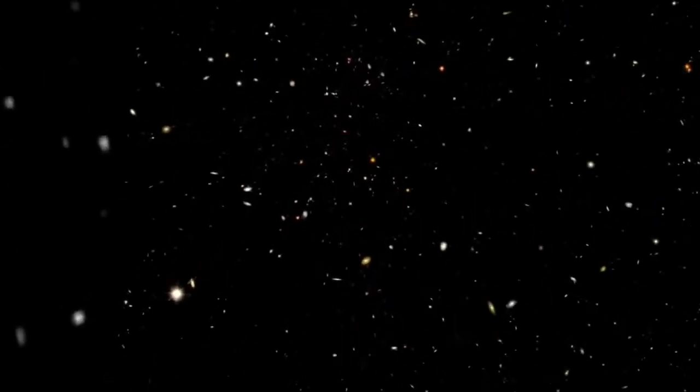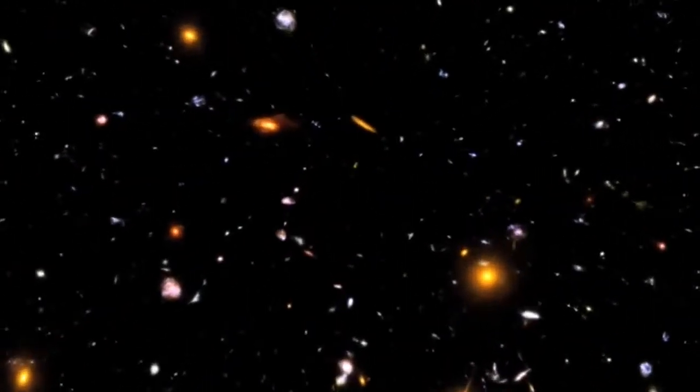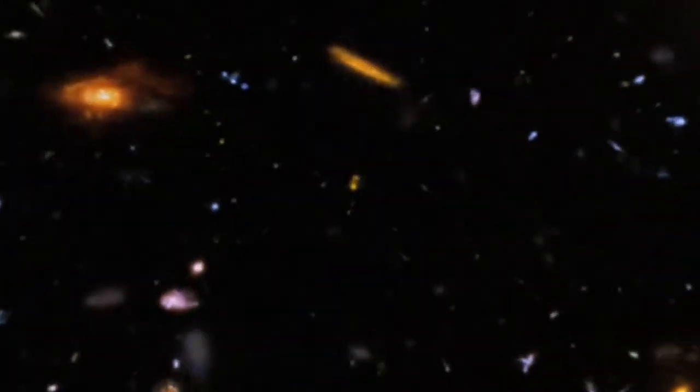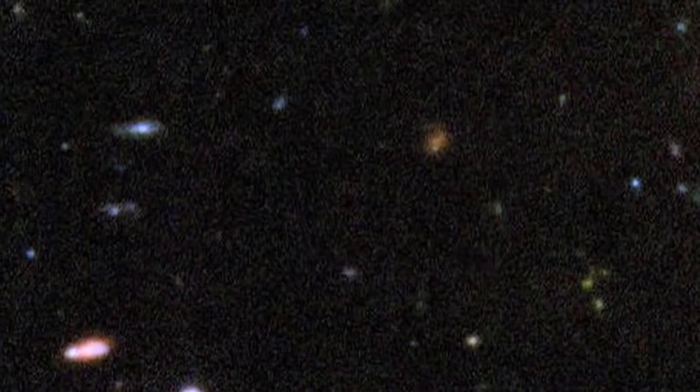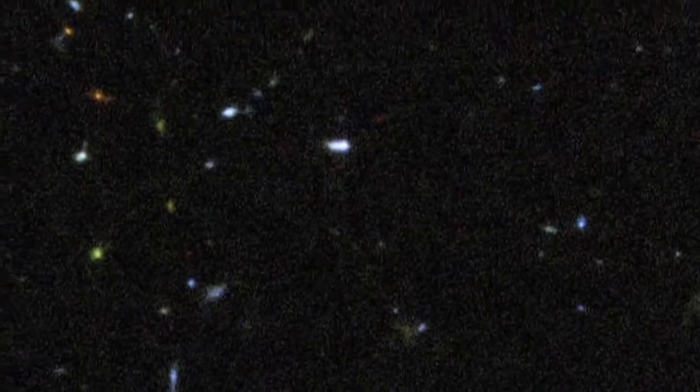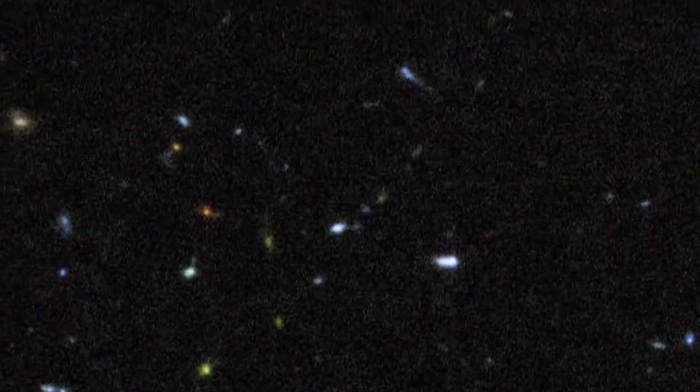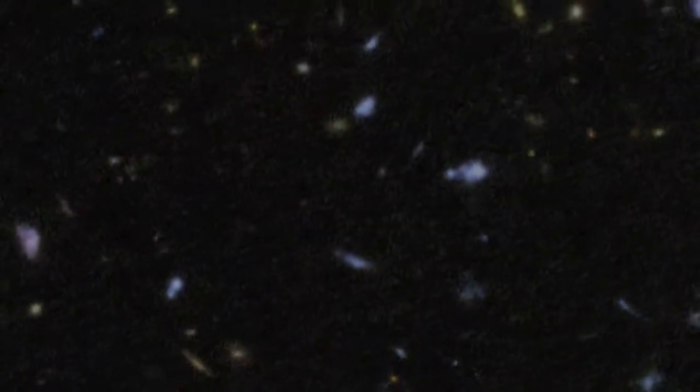These deep-field images offer incredibly clear views of the cosmos in its infancy. What drew astronomers' attention were the tiniest galaxies, covering only a few pixels on Hubble's detector. Most of them do not have the grand spiral or elliptical shapes of the large galaxies we see closer to us today.